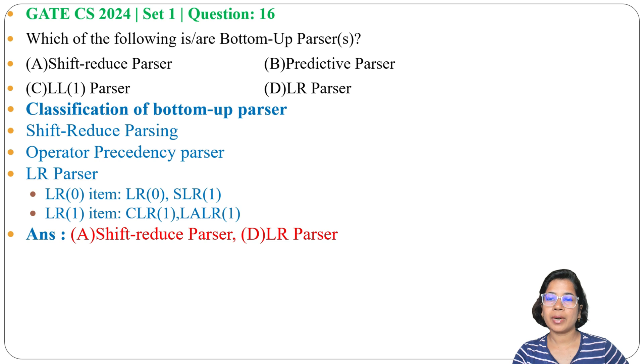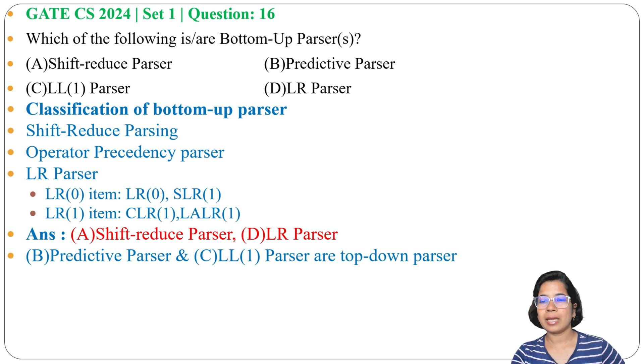Option B and C, predictive parser and LL1 parser, come under top-down parser. So the answer is option A and option D. Shift-reduce parser and LR parser are bottom-up parsers. I already discussed parsing in chapter 2 of compiler design.